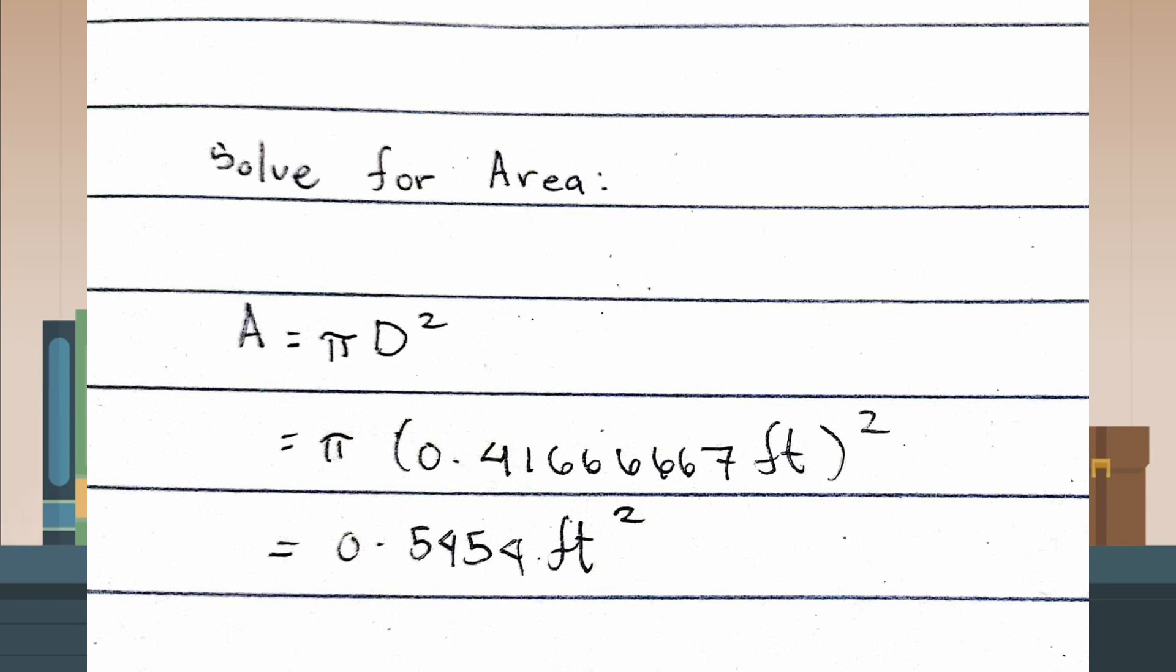So pi times 0.41666667 feet squared equals 0.5454 feet squared.